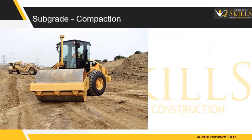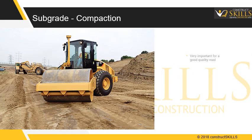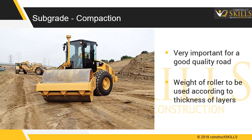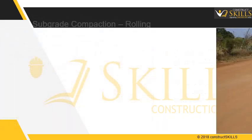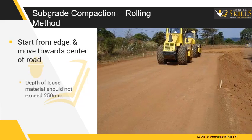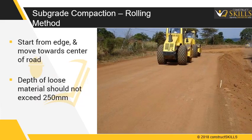Subgrade compaction rolling: the subgrade should be compacted in layers. Heavy compaction might be harmful as it might destroy the internal structure of soil. Start from the edge and move towards the center. Depth of loose material should not exceed 250 mm.